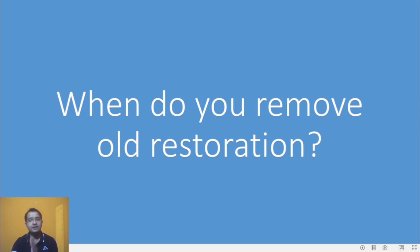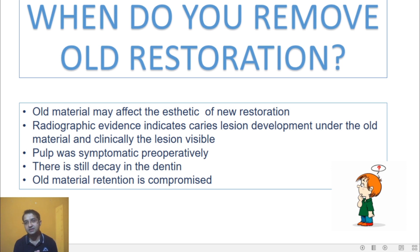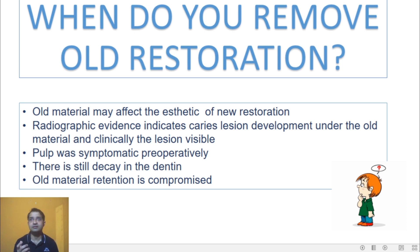Before going in depth about dental decay, let us see when you should remove an old restoration. Personally, old amalgam restorations should be removed completely because they don't bond with freshly mixed amalgam. However, textbooks say you can create a cavity alongside the old restoration if certain criteria are met. If old material affects the aesthetics of the new restoration, you should remove it. If there is decay below the old restoration, you must remove both the restoration and the decay before doing a new restoration.